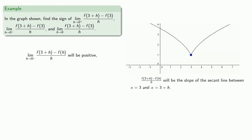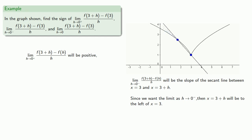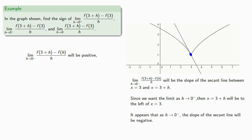Again, the difference quotient is the slope of the secant line between two points. Since we want the limit as h goes to 0 from below, x equals 3 plus h will be to the left of x equals 3. So we have our point at x equals 3, a point somewhere to the left, the secant line, and as the point gets close, it appears that as h goes to 0 from below, the slope of the secant line will be negative.